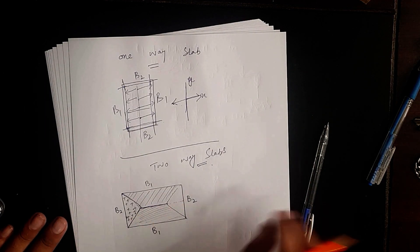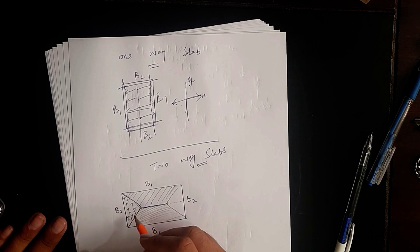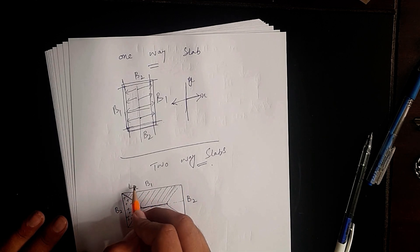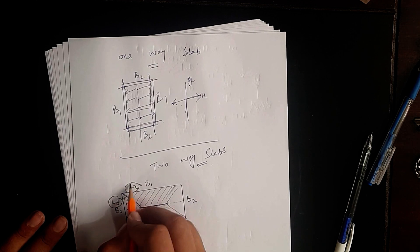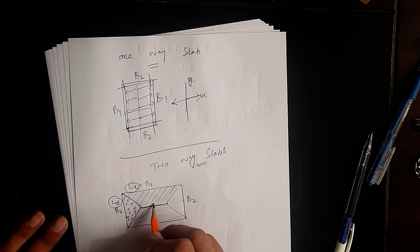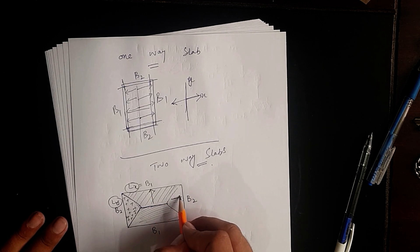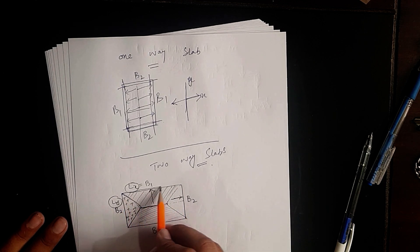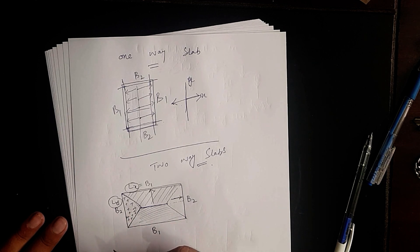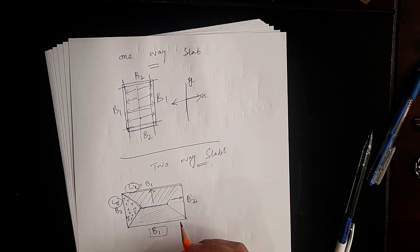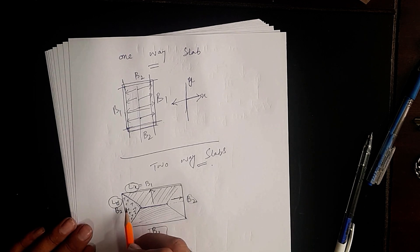I am using a plus sign just to differentiate between trapezoidal load and triangular load. I am calling the longer direction LX and the shorter direction LY. The load is distributed in the LX direction in a trapezoidal formation and in the Y direction in a triangular formation. You can see that on the longer direction the load is more compared to the shorter direction. So when designing the beam, keep in mind that the shorter beam will carry less load than the longer beam.